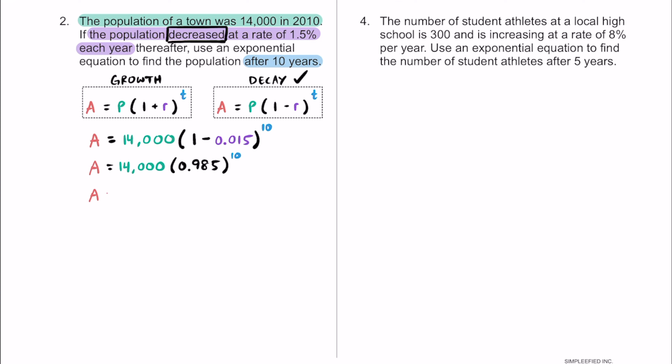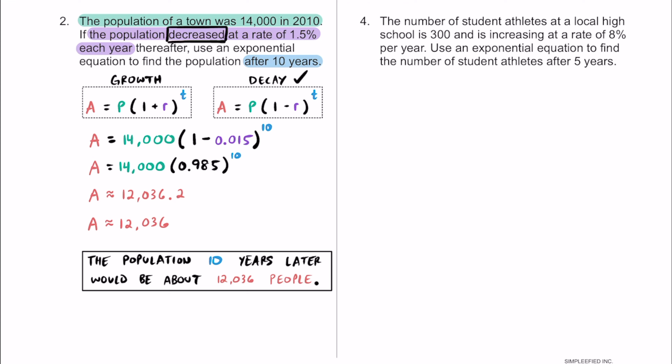We're dealing with people, so when we do this calculation, we get that the population 10 years later is going to be 12,036 people. We want at least one decimal place to decide whether to round up or down — that 0.2 tells us to round down. So the population is going to be about 12,036 people, rounded to the nearest person. That makes sense because it's less than the 14,000 we started with in 2010.